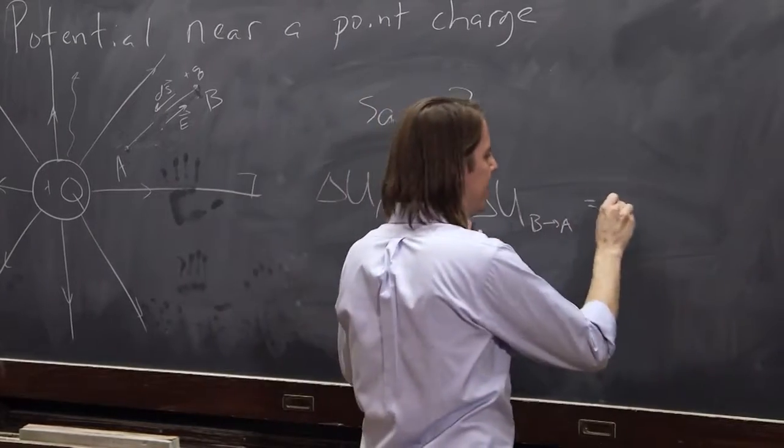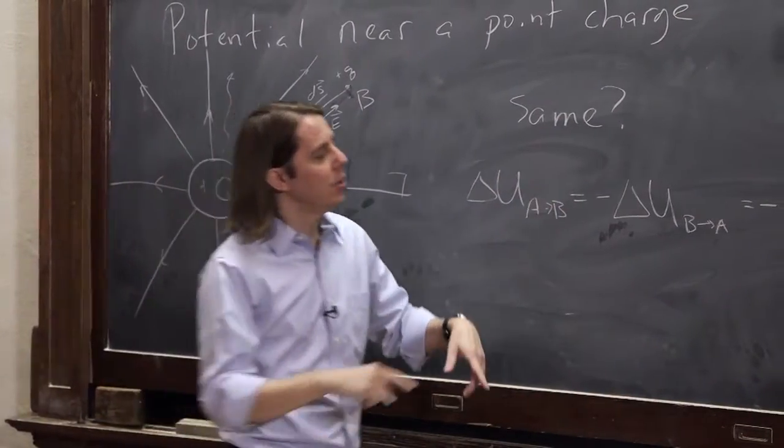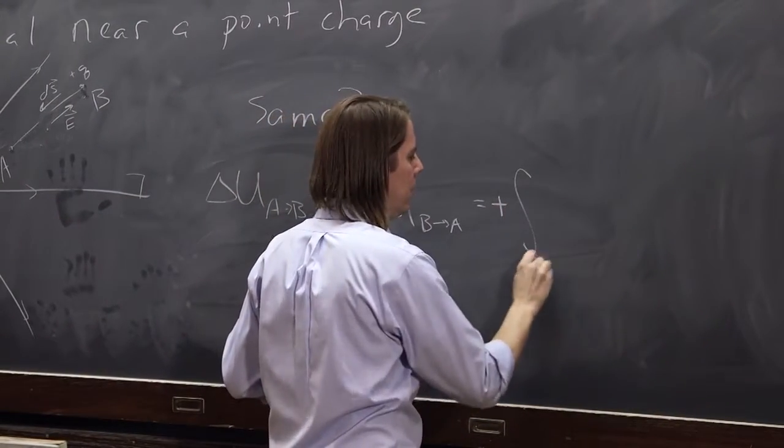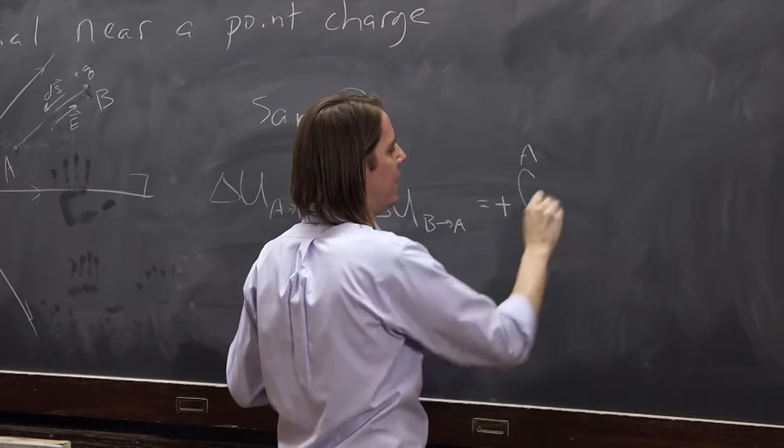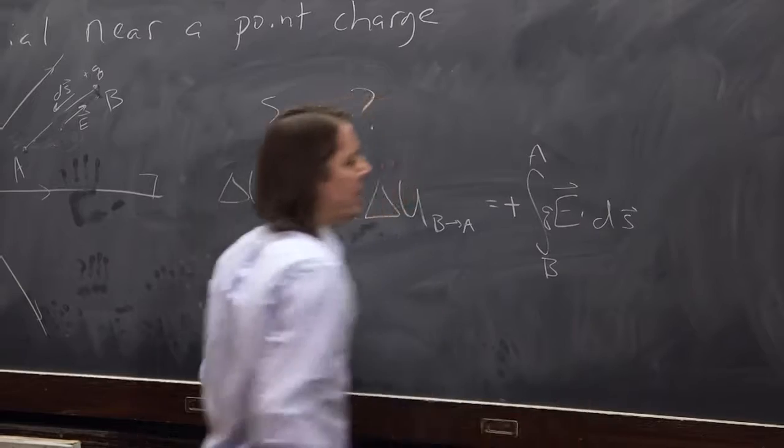So we have a negative. And then delta u b to a was a negative integral. That negative sign, if we brought it out, would make that positive integral b to a of qe dot ds.